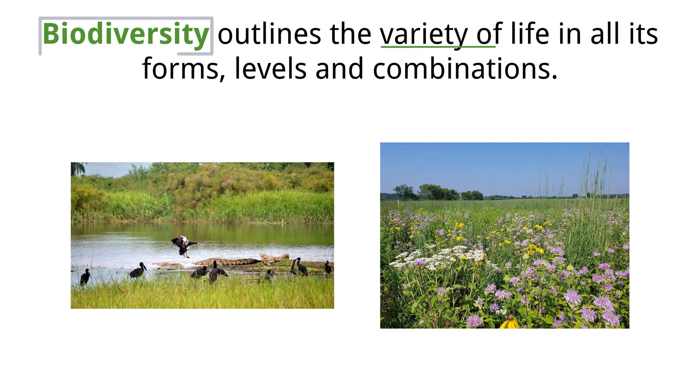Biodiversity is simply the variety of life on Earth, in all of its different forms and combinations. It includes three main types of diversity. First, there's ecosystem diversity, which means the range of different habitats and natural communities, like a forest, a coral reef, or even a prairie. Each of these ecosystems has its own unique mix of living things.